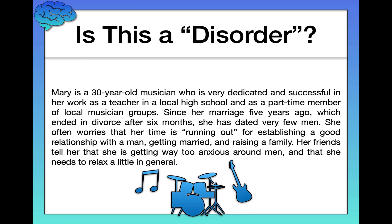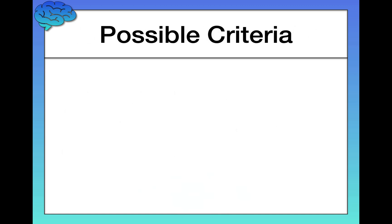Mary is a 30-year-old musician who is very dedicated and successful in her work as a teacher in a local high school and as a part-time member of local musician groups. Since her marriage five years ago — which ended in divorce after six months — she has dated very few men. She often worries that her time is running out for establishing a good relationship, getting married, and raising a family. Her friends tell her she is getting way too anxious around men and just needs to relax. In reality, all three of these descriptions are based on real cases, and we would call all of these situations disordered.